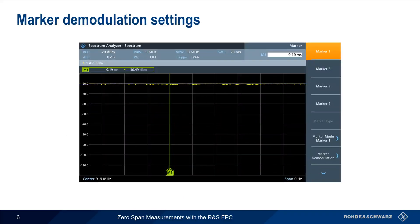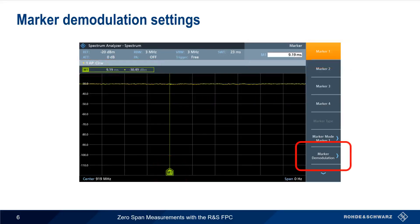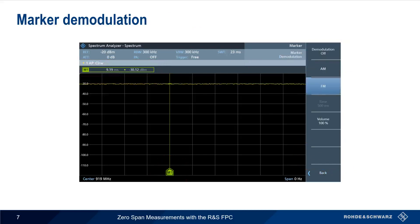Assuming that we've correctly configured our center frequency and set the span to zero, our power versus time is displayed as a line, and we can set our marker anywhere along this line. The next step is choosing Marker Demodulation. After we choose the correct modulation type — AM or FM — we should begin hearing a continuously demodulated audio signal. Note that we may need to increase the volume and/or use headphones, especially if working in a noisy lab environment.